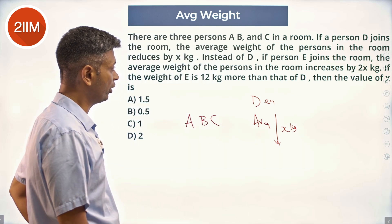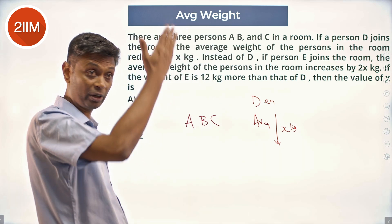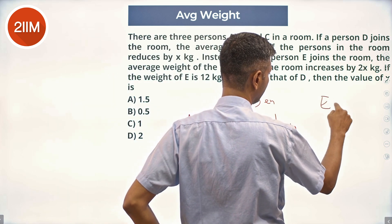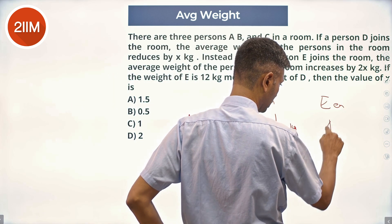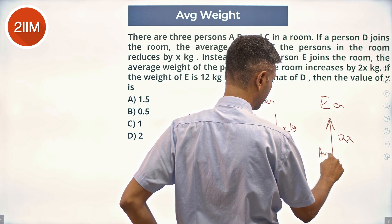If person E joins the room, the average weight of the persons in the room increases by 2x kilograms. When E enters, the average increases by 2x kilograms.